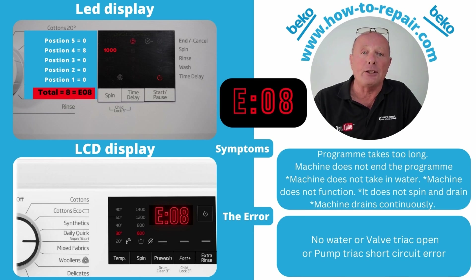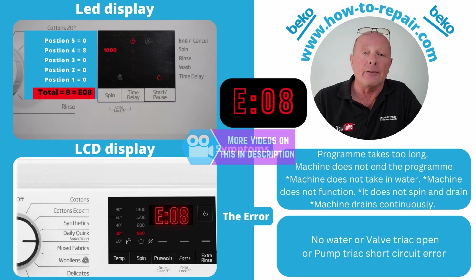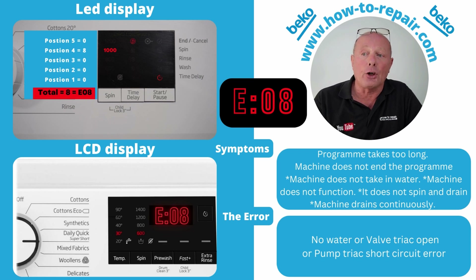Error code 8 is normally to do with the water supply to the machine. You may have a kinked inlet pipe, no water from the tap, or a water valve that has gone open circuit. Videos below show how to replace and test water valves. E08 is displayed on the LCD; on the LED version, position 4 is illuminated with a value of 8, giving error code 8.